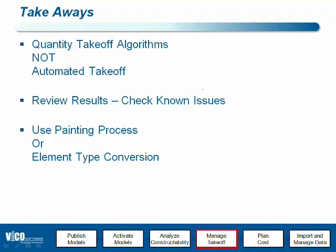The third conclusion is that painting is an important part of the takeoff manager process. Painting is used to reclassify where the geometry analysis failed because of known limitations. You can also use element type conversion, which sometimes solves that too — for example, if a reference line is missing, you may want to convert it to a slab, which does not require a reference line, and you get the vertical surface area.